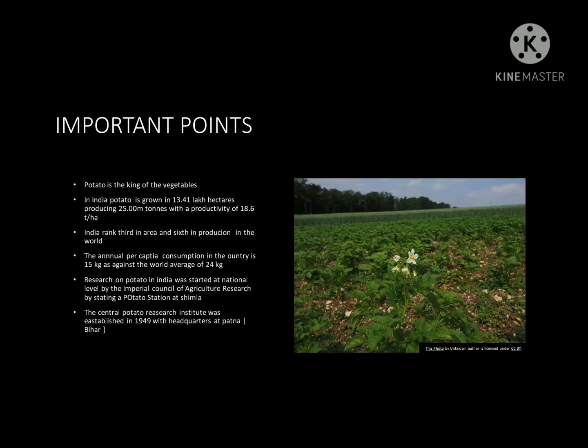Potato is the king of vegetables in India. Potato is grown in 13.41 lakh hectares, producing 25,000 million tons with a productivity of 18.6 tons per hectare. India ranks third in area and sixth in production in the world. The annual per capita consumption in the country is 15 kg against the world average of 24 kg.